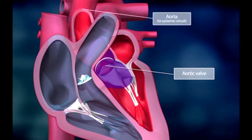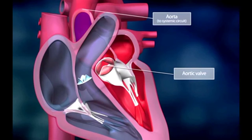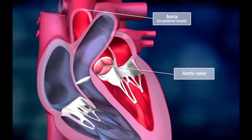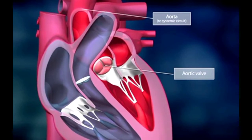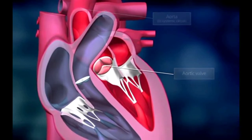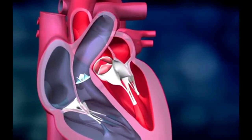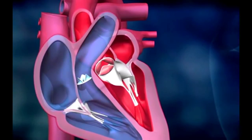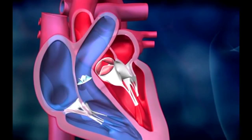Now the left ventricle contracts and the aortic valve opens. The oxygen-enriched blood flows into the aorta and is distributed to every organ in the body via the blood circulating system.